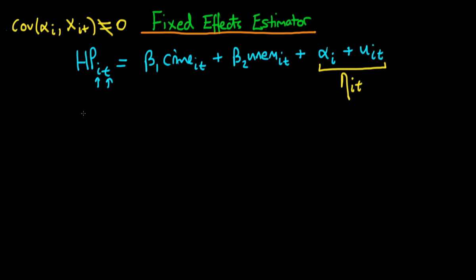If we take this original equation and then what we do is we calculate the average of let's say house prices in a given city i but across time.